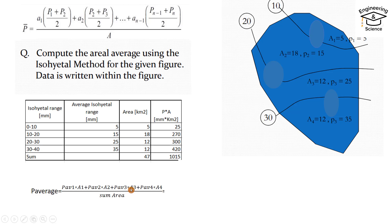Plus P average 3 multiply A3, which is 25 multiply 12 equals 300, plus P average 4 multiply A4, which equals 420, over sum of area which is 47. So it equals P multiply A, which is 1015 millimeter kilometer square.